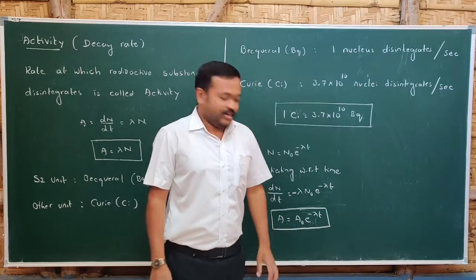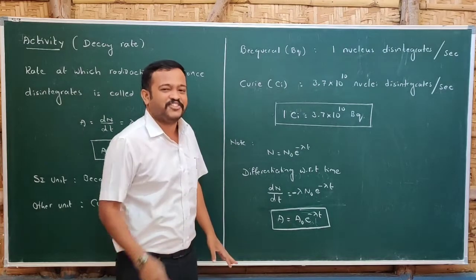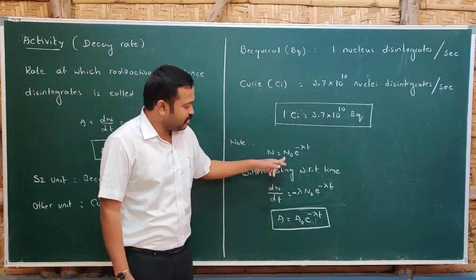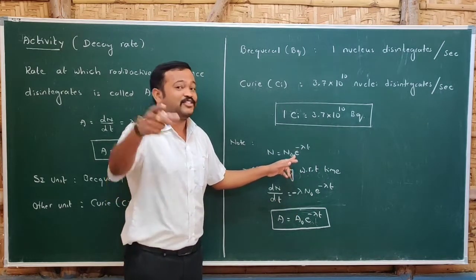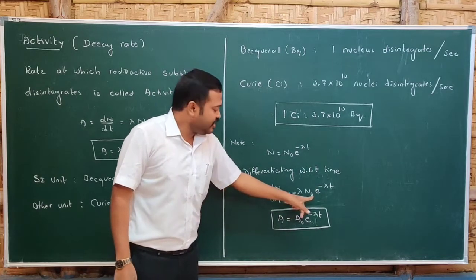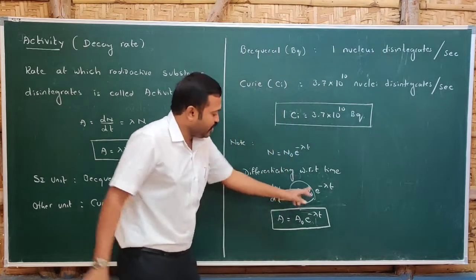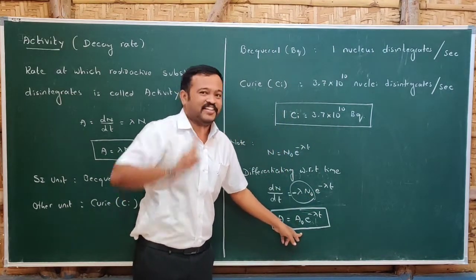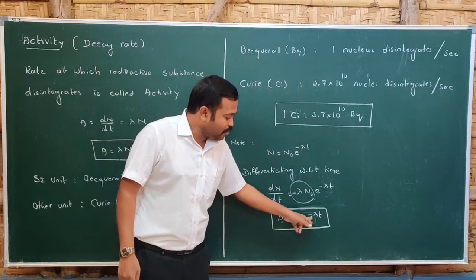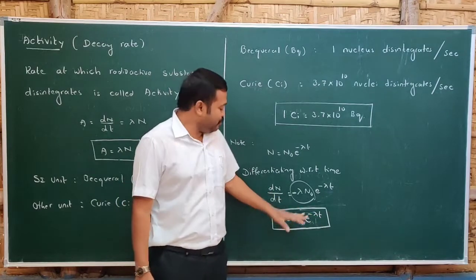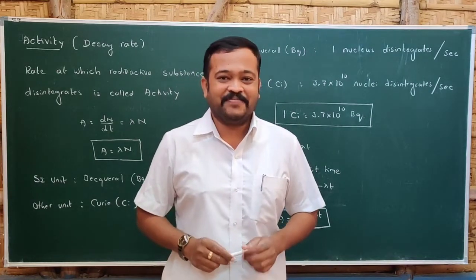From the law of radioactive decay, N = N₀e^(−λt). Differentiating with respect to time gives dN/dt = −λN₀e^(−λt). Taking λN₀ = A₀ (initial activity), we get A = A₀e^(−λt), which is the expression for activity at time t. This concludes the discussion on activity.